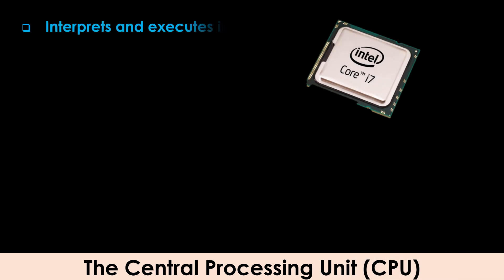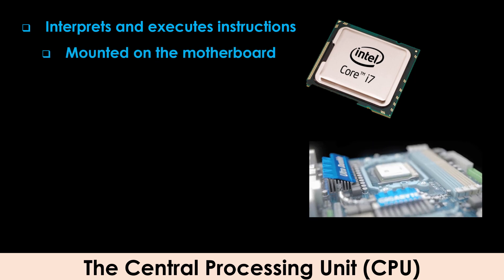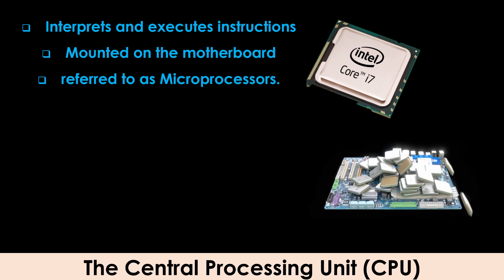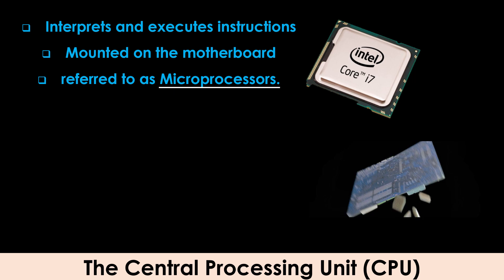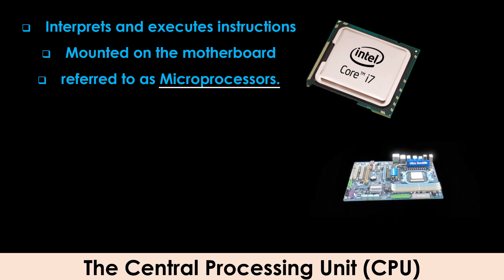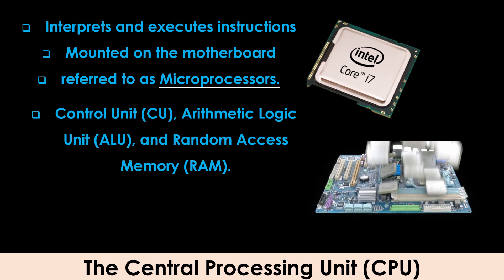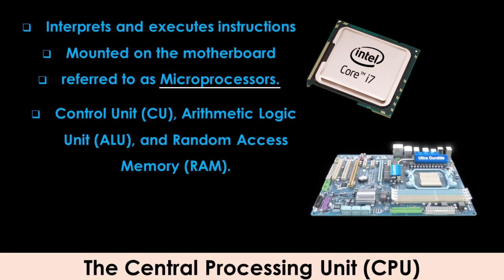The CPU interprets and executes commands from the hardware and software. It is mounted on the motherboard. Modern CPUs found in PCs and equipment are referred to as microprocessors. The CPU is made up of its control unit, arithmetic logic unit, and random access memory, also known as the immediate access store.